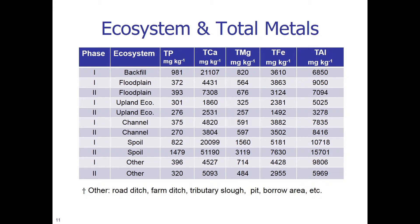Let us look at the ecosystems and the total P, total calcium, magnesium, iron, and aluminum. In the spoil area, you will find invariably higher concentrations of total P, total calcium, total magnesium, and to some extent total iron and total aluminum as well — making the spoil area different from the rest of the ecosystems. The 'other' category here includes road ditch, farm ditch, tributary slope, pit, borrow area, etc.